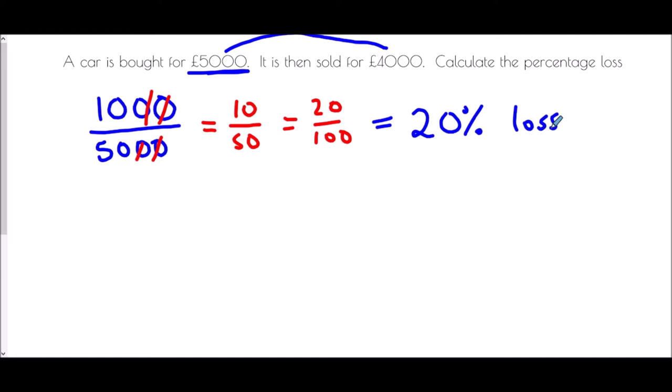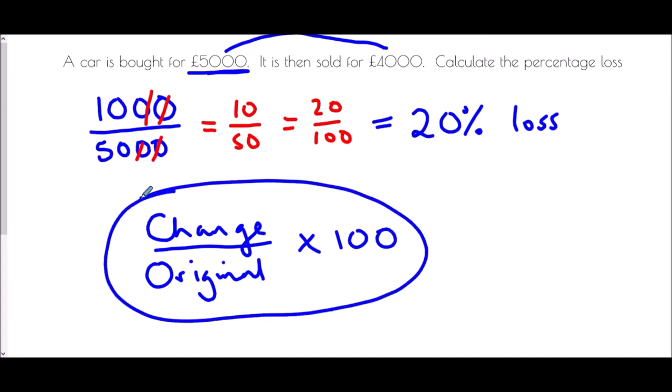Now what we're seeing here is that in order to calculate the percentage change what we want to be thinking about is the change divided by the original value and depending on if you have a calculator or not either using that fraction to convert it to a fraction out of 100 or with a calculator by simply multiplying by 100. That will give you the percentage change.